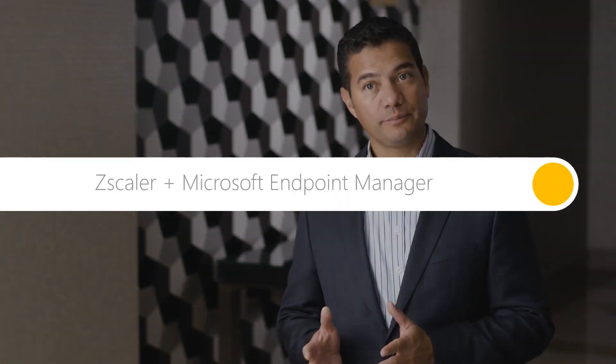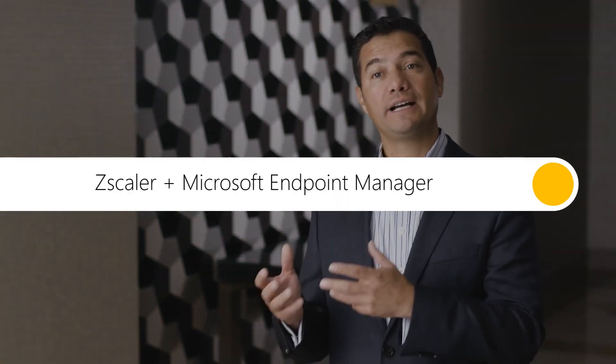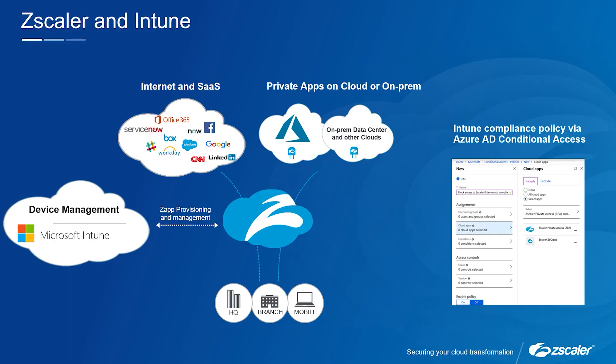Our integration with Intune allows customers to easily find Zscaler applications in the drop-down menu through the Intune management interface. As customers decide to start using the service, they can also take advantage of other advanced capabilities, inclusive of defining the specific parameters they want for a specific employee or group — in terms of the configuration they want them to have to gain access to the services that we provide at Zscaler.